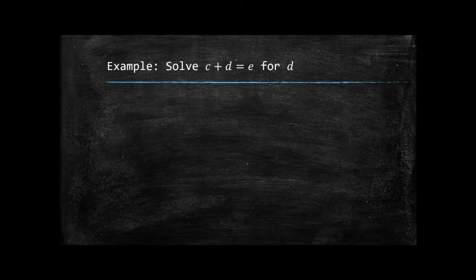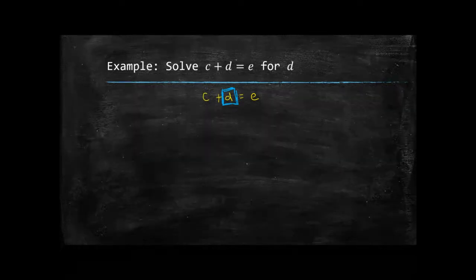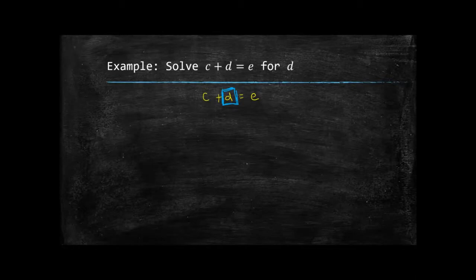I'm going to start with some simple examples and work to more complicated ones, giving you a wide variety of the techniques that you use. The first one: we're going to solve C + D = E for the letter D. So I want D by itself, which means I need to remove C. Just like when we had numbers, to move something from one side to the other you have to add or subtract. Since there's no minus sign in front of C, we assume it's positive, so we're going to subtract C from both sides.